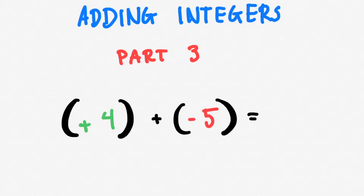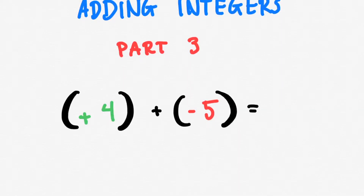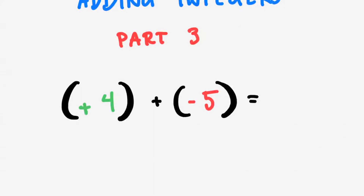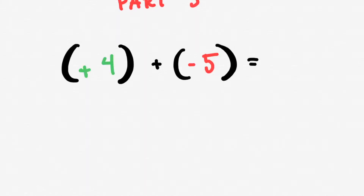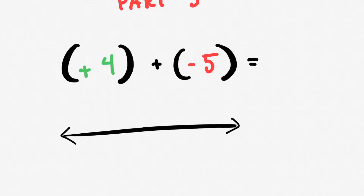The method looks something like this. The first time we do this method I'm actually going to draw a number line just so we have something to lean back on to support our understanding. But after that we're going to do it without any visuals. I'm going to start off by putting zero right in the number line — it's usually important to have zero in your number line especially when you're dealing with positives and negatives.